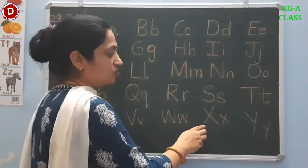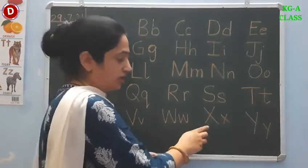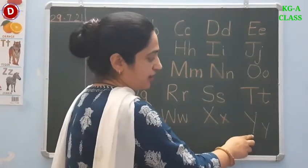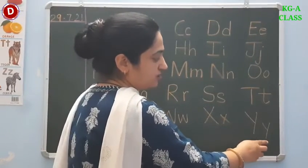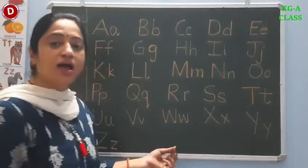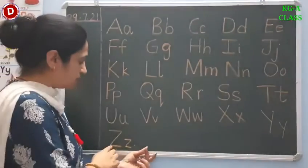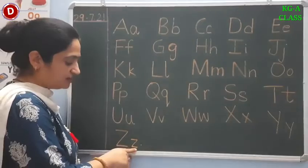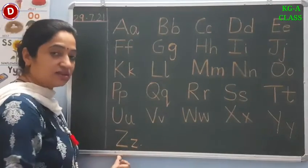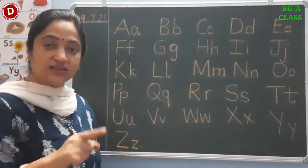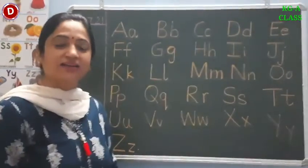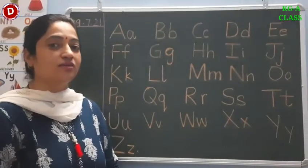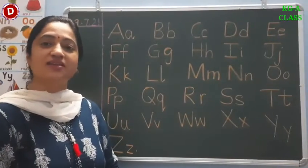Now comes X. The sound of X is 'x'. This is capital X and this is small X. Children, this is Y. Capital Y, small Y. Y says 'y' as in yuck. Now comes Z. This is capital Z and this is small Z. The sound of Z is 'z' as in zigzag. In this way, children, you have to learn the phonetic sounds of the letters A to Z.